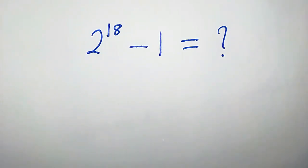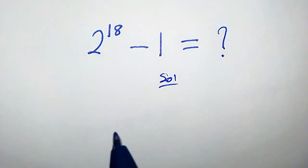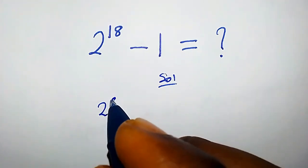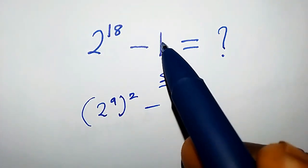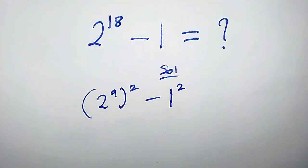How do we handle this kind of problem without using a calculator? 2 to the power of 18 could be written as 2 to the power of 9 times 2 minus 1, which is the same thing as 1 squared.